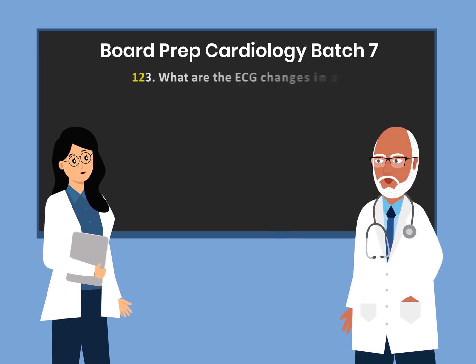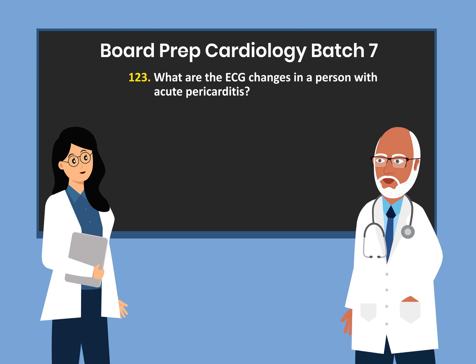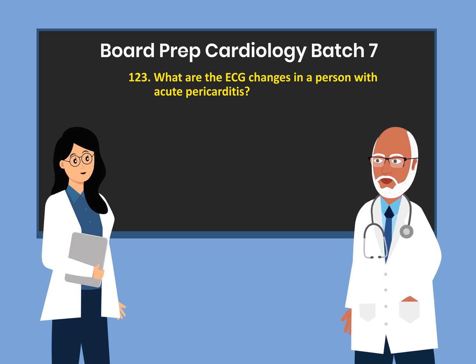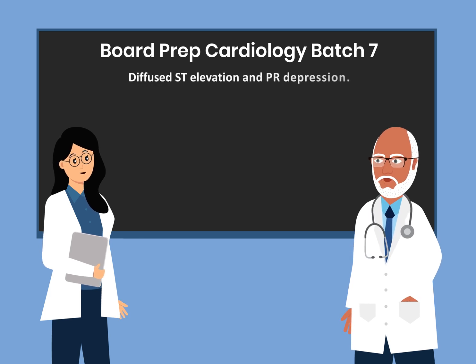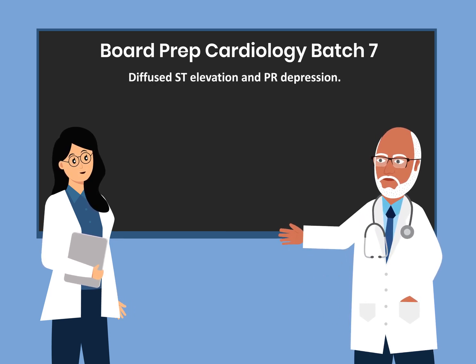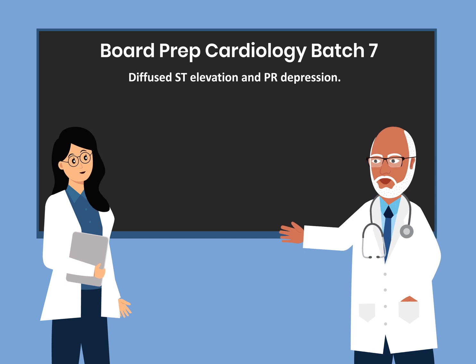Question 123. What are the ECG changes in a person with acute pericarditis? Diffuse ST elevation and PR depression.